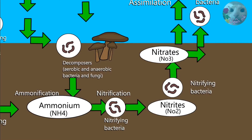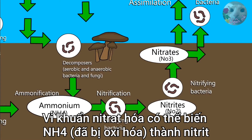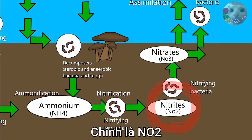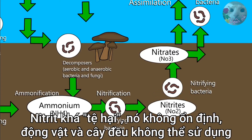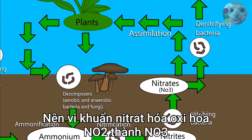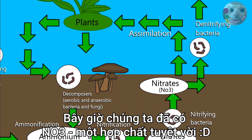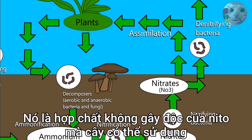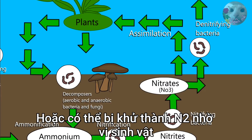Nitrifying bacteria can oxidize the ammonia into nitrites, which is NO2. Nitrite is kind of terrible — it's worthless, not super stable, and plants and animals can't use it. But bacteria can. So then more nitrifying bacteria oxidize the nitrites into nitrates. Nitrates are wonderful — a very non-toxic form of nitrogen that can be used readily by plants, or be denitrified back into nitrogen gas by more bacteria.